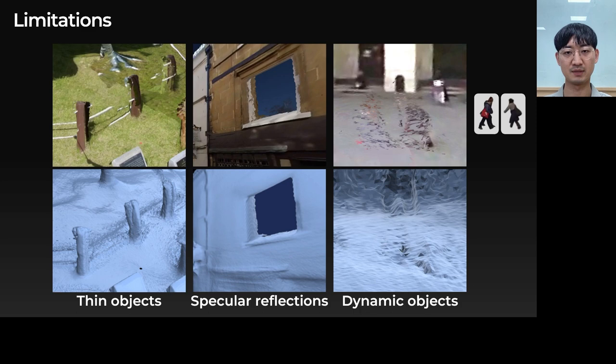Finally, our method fails to reconstruct dynamic objects. Removing dynamic objects without masking them manually is a challenging problem because usually the velocity and appearance of the dynamic objects keeps changing.